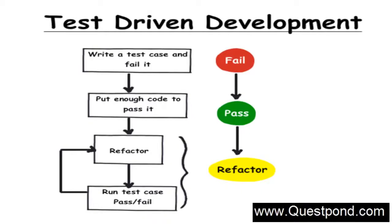In a normal development scenario, you first write the code and then you write the test case. But in TDD, you first write the test case before writing a single line of code, and then you write the code which will run against that test case. The process is: first write the test case, execute it and it will fail. Then write enough code so that it passes. After that you refactor, add more methods, run the test case again, and ensure everything is working. You keep repeating this cycle until you finish your coding.